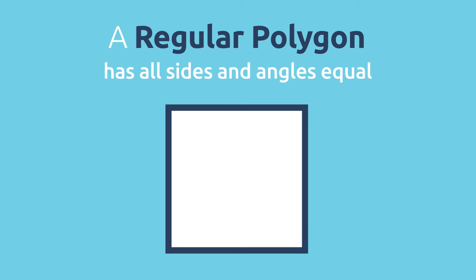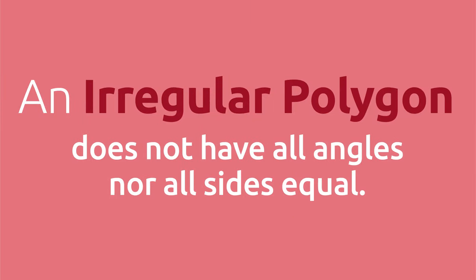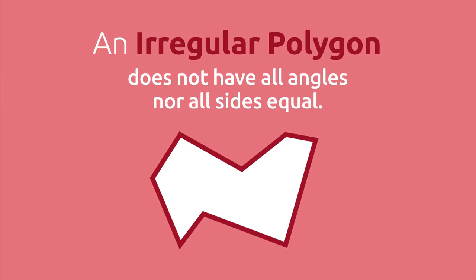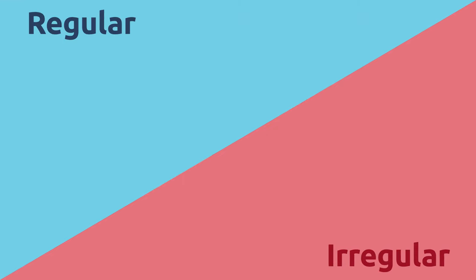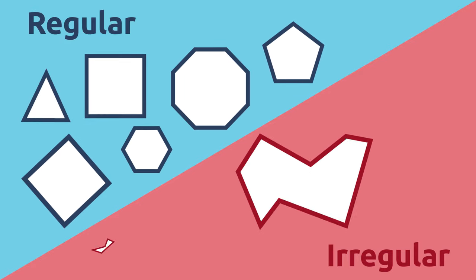A regular polygon has all sides and angles equal. An irregular polygon does not have all angles nor are all sides equal. Here you can see some examples of regular and irregular polygons.